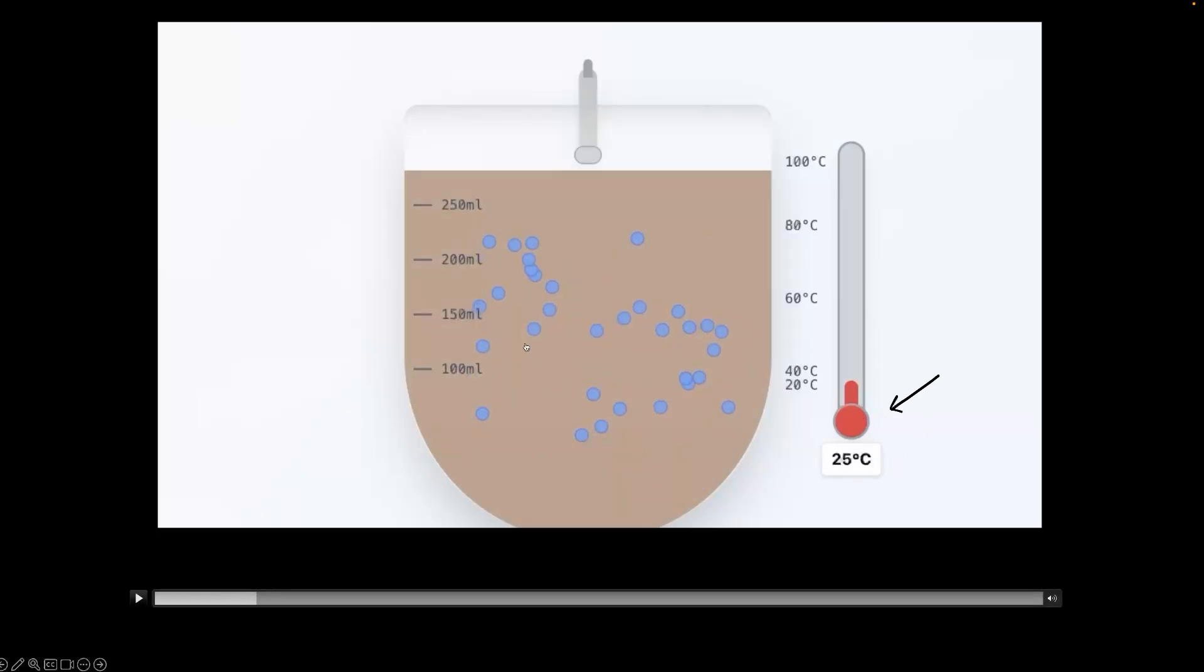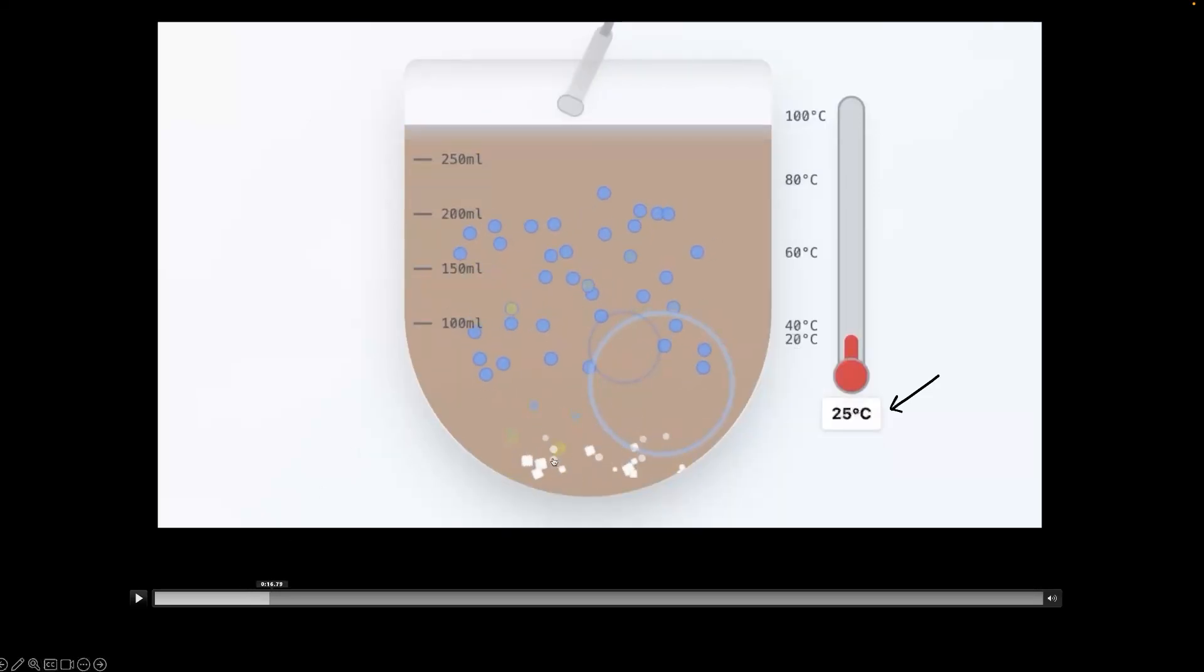Now, this solution is saturated. At this point, if we add more sugar, we see that the sugar is no longer getting dissolved into this liquid solution. It is now just crystallized at the bottom.